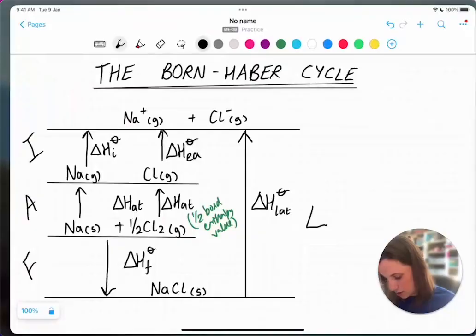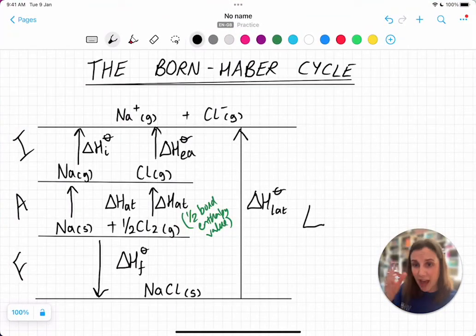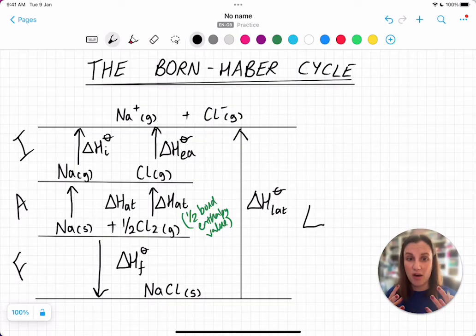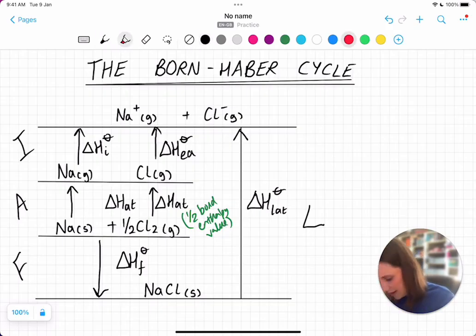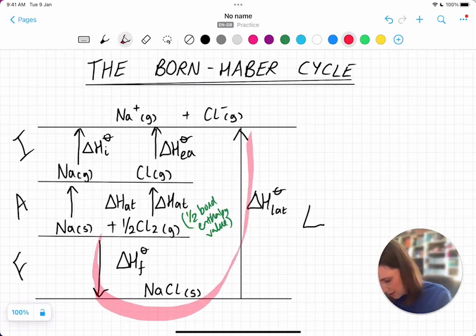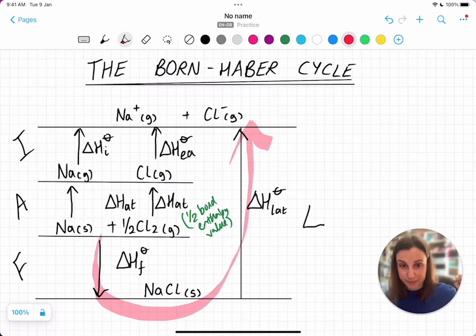Lots of these values you can find in the data booklet. And what you're looking at is you can work out any of these from all the others. As long as you've got everything else, you can work out one of these values. So it depends on what the question is. If we look at the arrows and which direction they're heading in, you can see that these two arrows here are both going anti-clockwise, whereas the other values are all going in a clockwise direction.